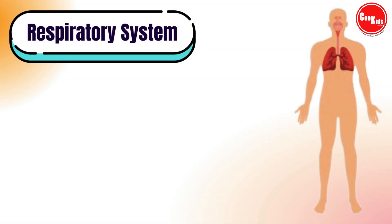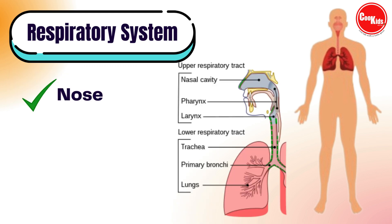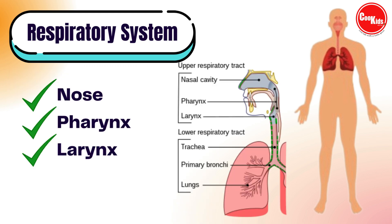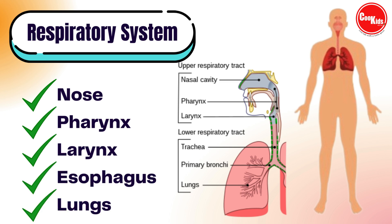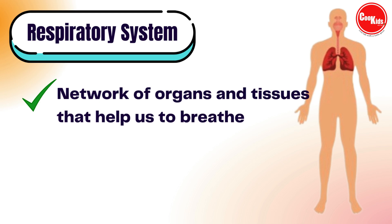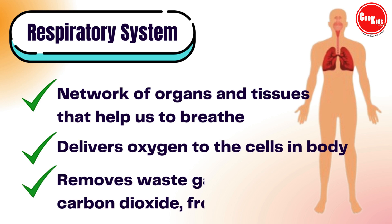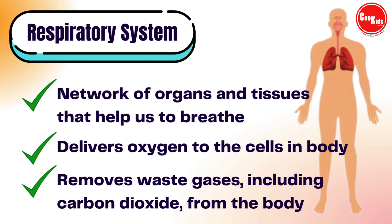Next comes the respiratory system. It consists of the nose, pharynx, larynx, esophagus, and lungs. The respiratory system is the network of organs and tissues that help you breathe, including your airways, lungs, and blood vessels. The muscles that power your lungs are also part of the respiratory system. These parts work together to deliver oxygen to cells throughout the body and remove waste gases like carbon dioxide.